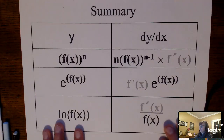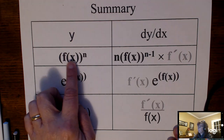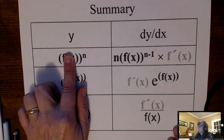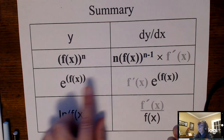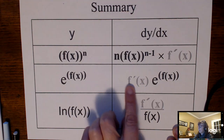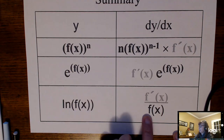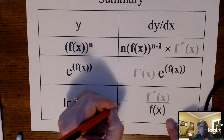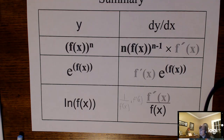To summarize the chain rule: if you have a function to the n, it's n times that function unchanged to the n minus 1 times the derivative of the inside. If you have e to the f of x, it's e to the f of x times the derivative of that power. And if you have the natural log of something more complicated than just x, it's 1 over that function unchanged times the derivative of that function. That's the end of the chain rule.